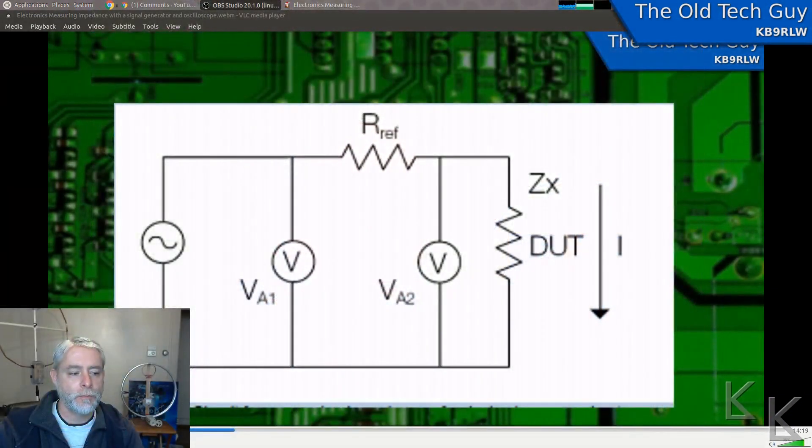You might remember the video we used. We used a really simple circuit where you've got a signal source and a reference resistor that you know the value of and the device that you're testing. You put in a set frequency, you measure the voltage on each side of the reference resistor so you know its voltage drop. You do a little bit of math and you come up with the voltage drop or the resistance, in this case impedance, of the device under test. Pretty simple.